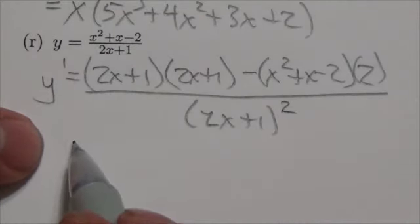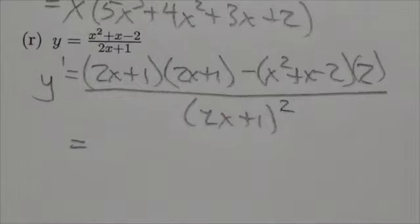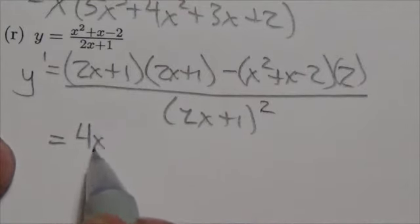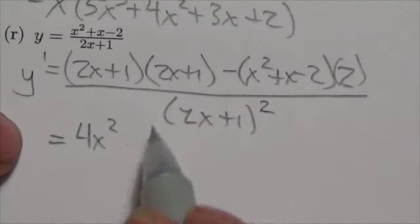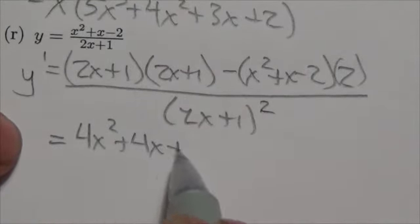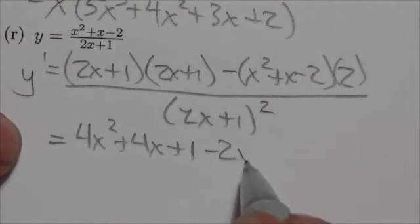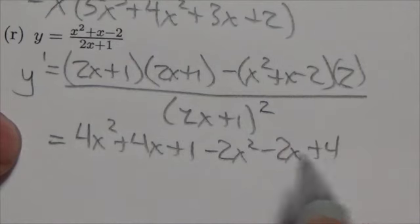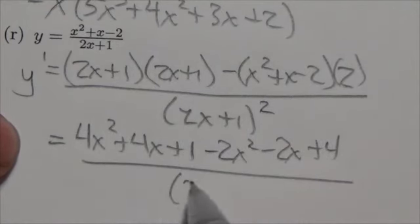Okay, now that's the derivative, but we really do need to simplify this, so this is going to become 4x squared plus 2x plus 2x, so plus 4x plus 1 minus 2x squared minus 2x plus 4 all over 2x plus 1 squared.